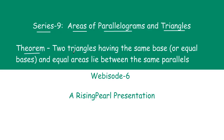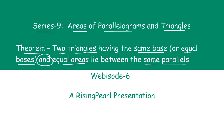Today the theorem that we are going to discuss is about two triangles. If we have two triangles such that these two triangles have the same base — that is, they have equal bases — and they have equal areas, then the theorem is telling us that these two triangles must lie between the same parallel lines.